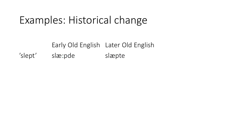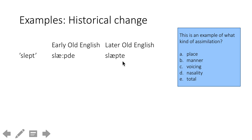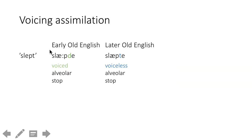Here's an example from early Old English to later Old English. Don't worry about the vowel length — the colon indicates a long vowel. But you see that the word for 'slept' went from having a D to a T. The segment that changes goes from a voiced D to a voiceless T. Therefore this is voicing assimilation, because it's becoming more like the voiceless P.